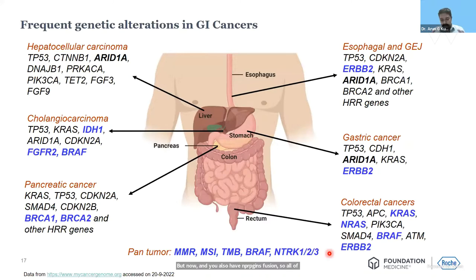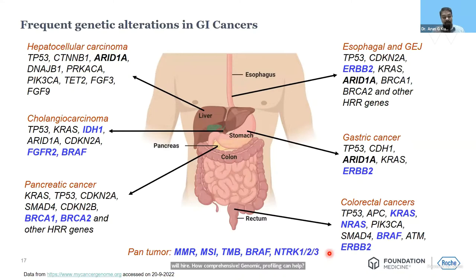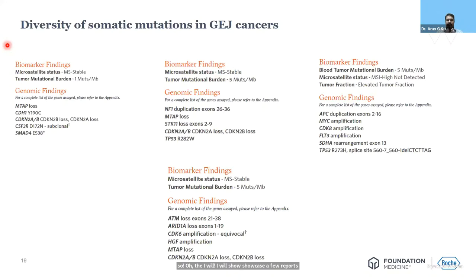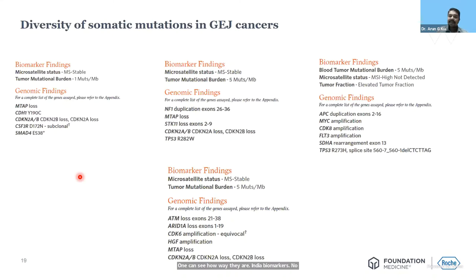Given the diversity of genetic architecture in each of these tumors, I will highlight how comprehensive genomic profiling can help understand tumor biology and look for therapeutic strategies in two specific tumors: a GEJ tumor and hepatocellular carcinoma. Here I'm showcasing four reports of GEJ tumors, and just looking at them, one can see how varied they are in their biomarkers — no two GEJ tumors have the exact same type of genetic alteration.